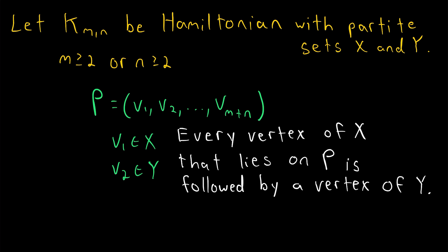You might think, well, maybe that's not true. Maybe this last vertex is a vertex of X, which would mean that not every vertex of X is followed by a vertex of Y, since this vertex isn't followed by anything. But in fact, we know this last vertex has to be in Y, because remember, originally we had a cycle where this vertex was followed by a vertex in X. Hence, v_{m+n} must be in Y.